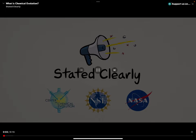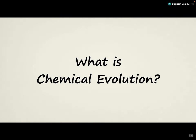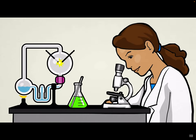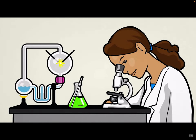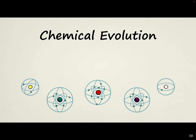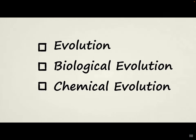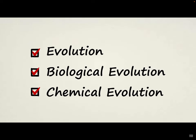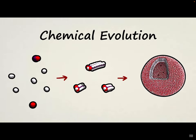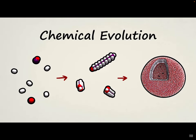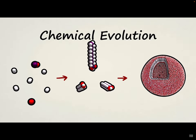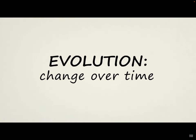Scientists have reason to think that the first living cells on earth came about through a natural process called chemical evolution. What is chemical evolution, how does it work, and how is it different from biological evolution? To answer these questions, we'll start by dissecting the terms and then look at how chemical evolution can take simple molecules and organize them into complex structured systems similar to those found in living cells. The word evolution simply means change over time.